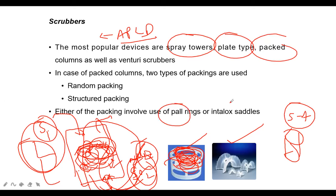Packing elements have different names - Raschig rings, Intalox saddles - depending on how and by whom they were invented. The goal is to maximize the external surface area available. If you calculate the area per ring you get to know how much surface area is available.